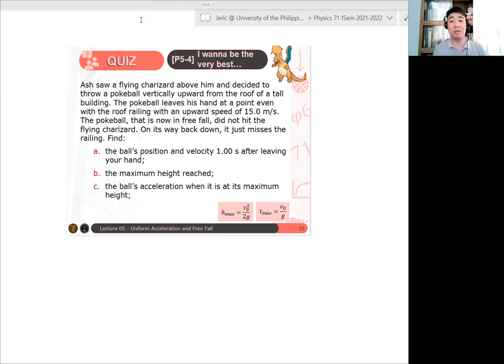Find A, the ball's position and velocity one second after leaving your hand. Letter B, the maximum height reached. And letter C, the ball's acceleration when it is at maximum height. Let me think of how you approach the problem maybe for a minute or two. We will solve this problem today.